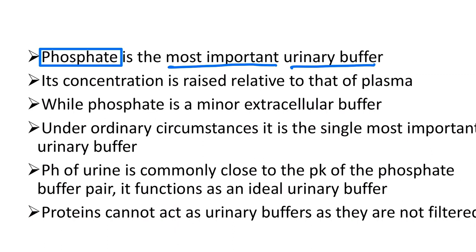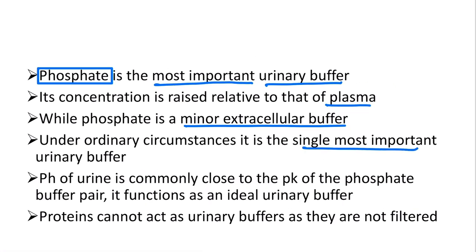Phosphate is the most important urinary buffer because its concentration is raised relative to that of plasma, while phosphate is only a minor extracellular buffer. In the urine, however, it is very important. Under ordinary circumstances it is the single most important urinary buffer, and the pH of urine is commonly close to the pK of the phosphate buffer, making its function ideal. Protein cannot act as a urinary buffer because proteins are not filtered — in normal physiological conditions with a healthy kidney, protein is completely reabsorbed.